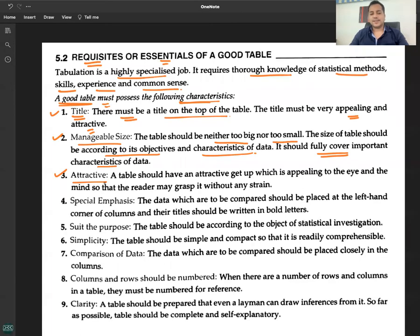Number three: Attractive. A table should have an attractive getup which is appealing to the eye and the mind, so that the reader may grasp it without any strain.